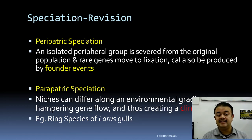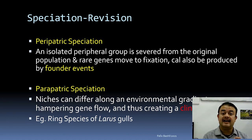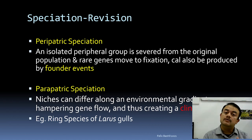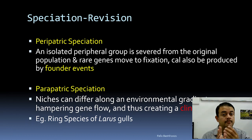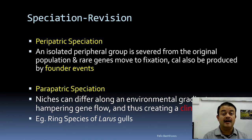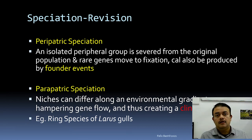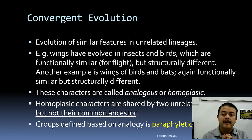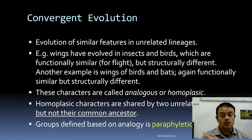Parapatric speciation is an ecological concept in which niches differ along an environmental gradient, hampering gene flow and creating a cline. Individuals prefer to mate with immediate neighbors along the gradient. A classic example is the ring species concept in the Larus genus, where the two extreme populations cannot interbreed. All these — allopatric, sympatric, peripatric, and parapatric — are examples of divergent evolution. There is also another form called convergent evolution, which is the evolution of similar features in unrelated lineages, such as the wings of birds and the wings of butterflies.